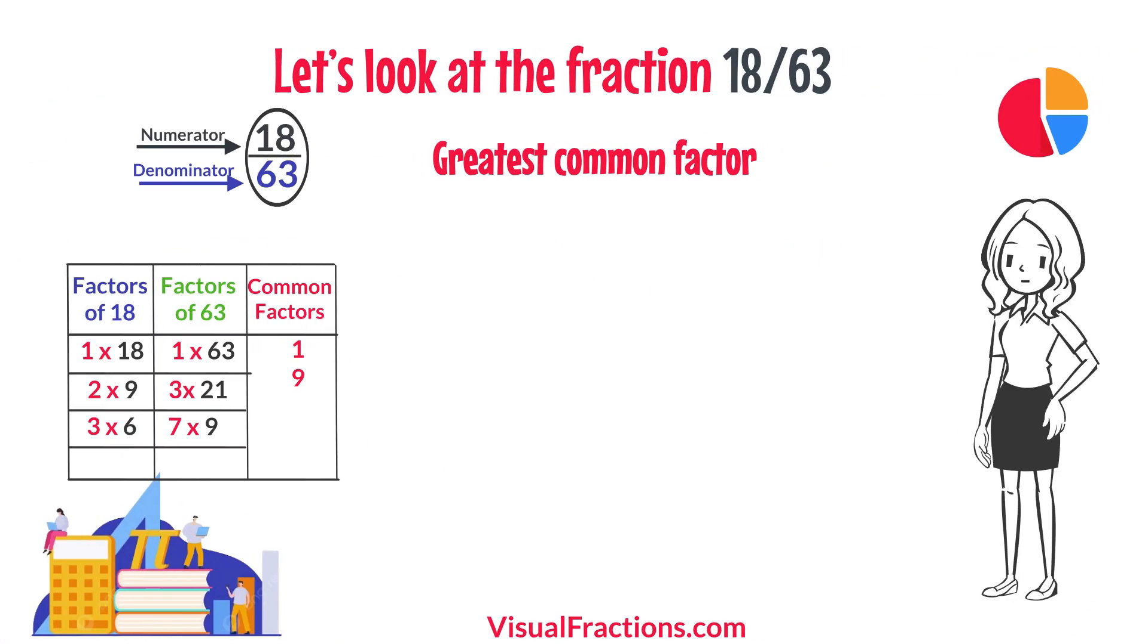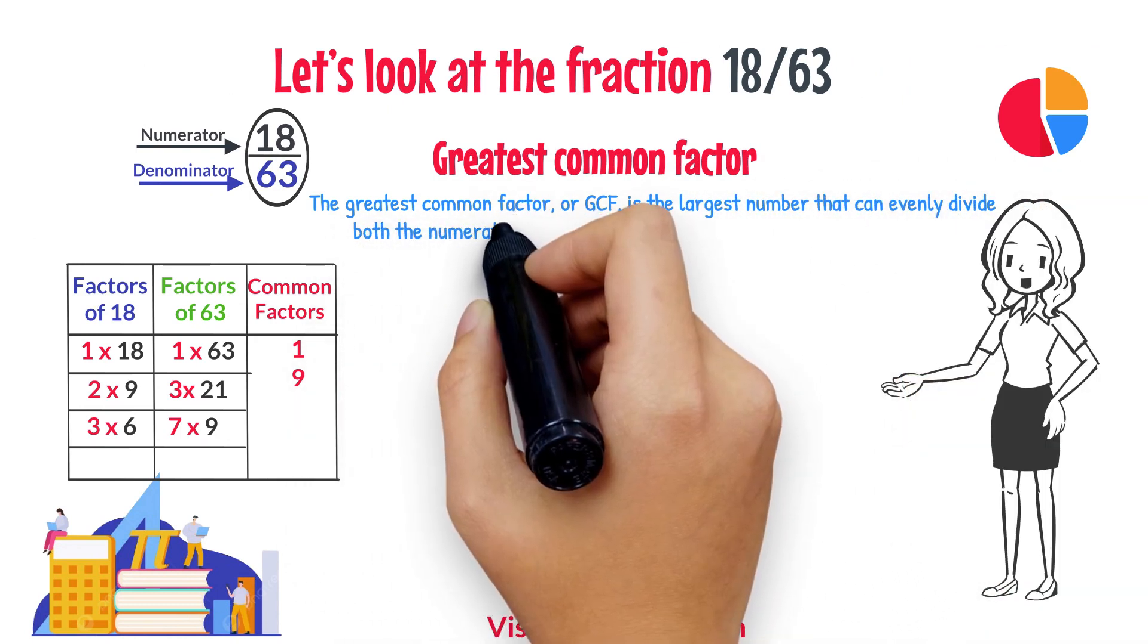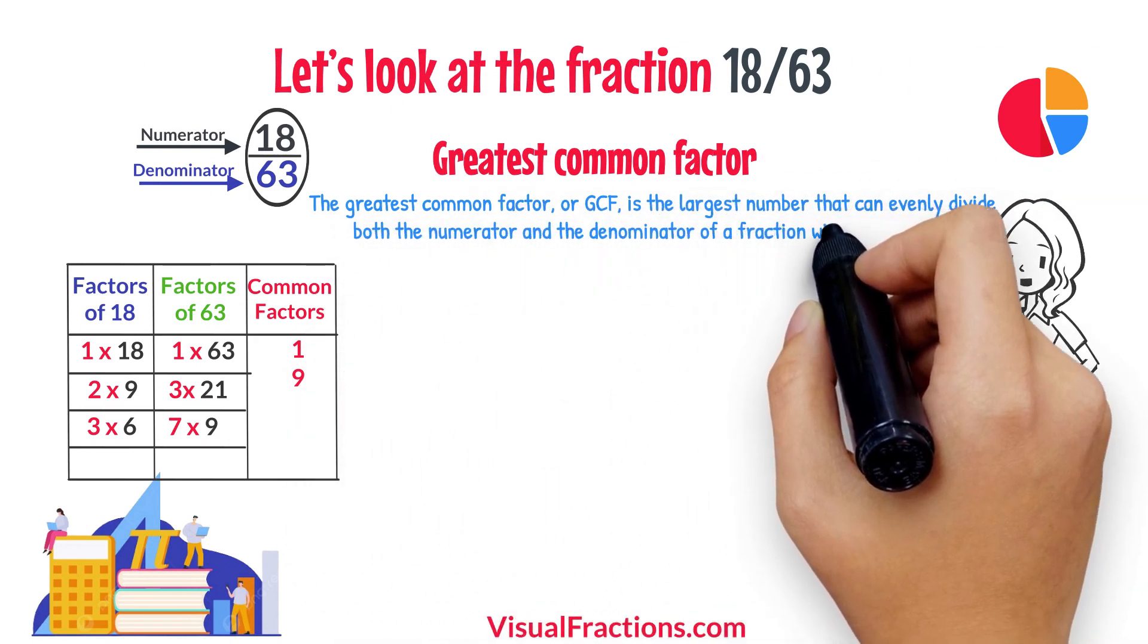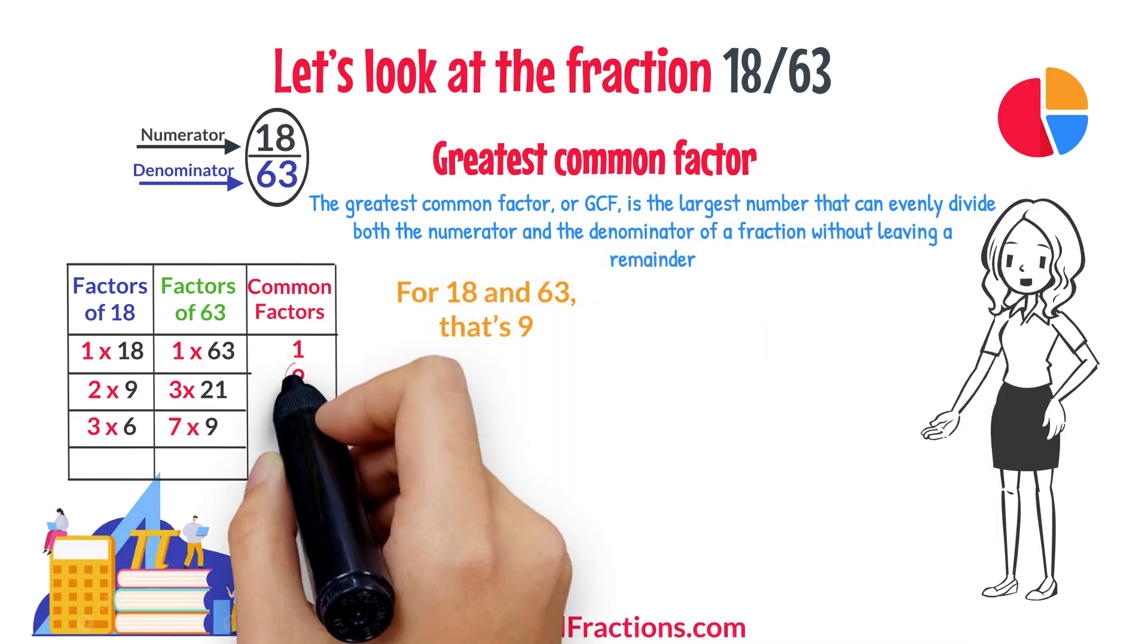The greatest common factor, or GCF, is the largest number that can evenly divide both the numerator and the denominator of a fraction without leaving a remainder. For 18 and 63, that's 9.